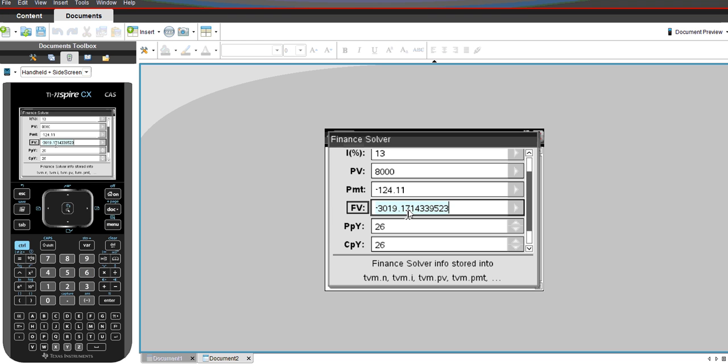We hit enter, and we find that after two years, that is 52 fortnights, there is still a balance outstanding of $3,019.17.